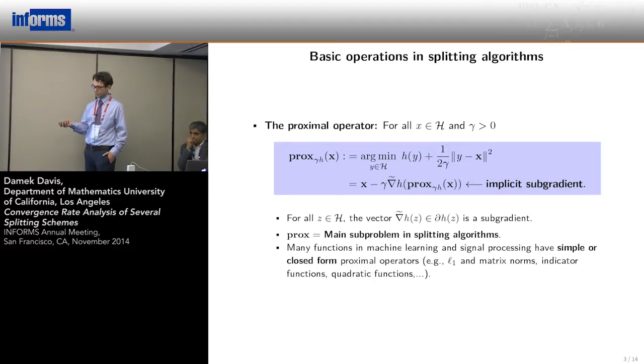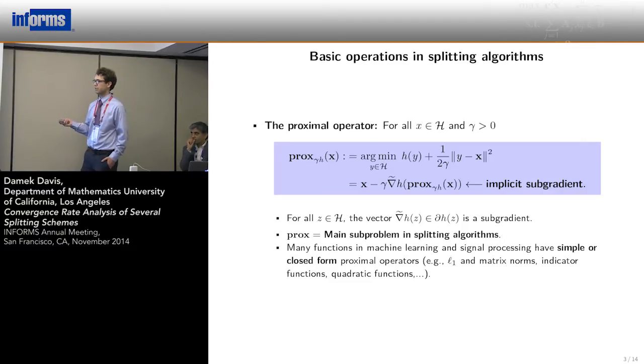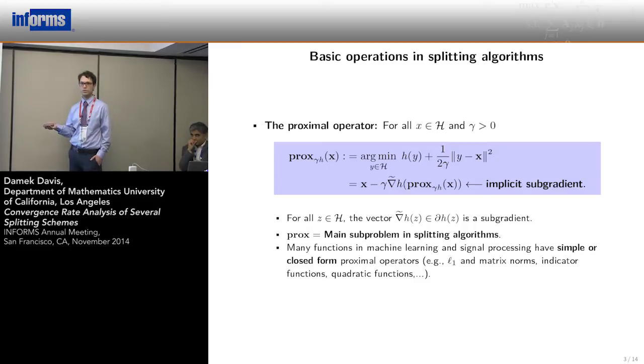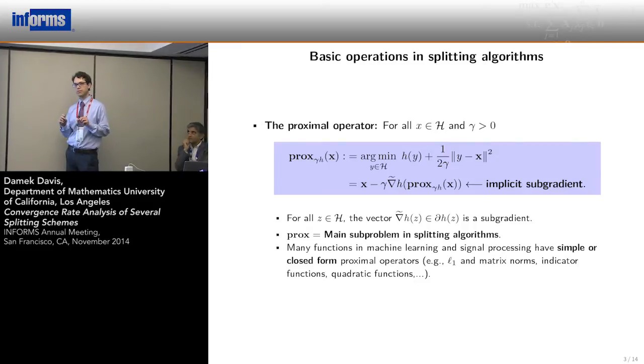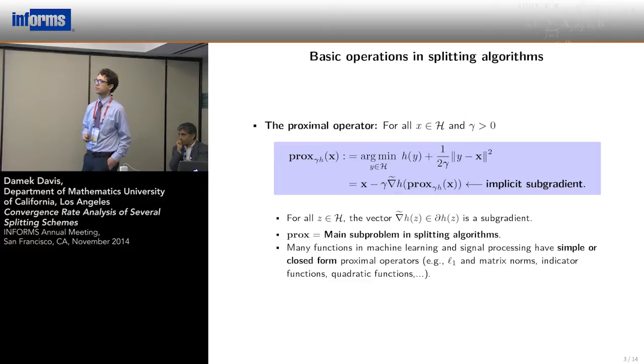Why is this operator so important and useful? For me, it's useful because many functions in machine learning have simple or closed form proximal operators. The most common one is the L1 norm, which has a component-wise soft thresholding form. This is why algorithms in, say, compressive sensing are so fast today.